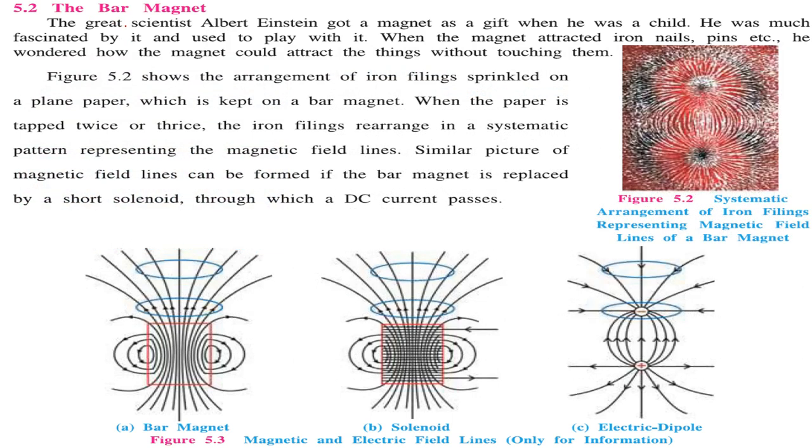The bar magnet. Great scientist Albert Einstein got a magnet as a gift when he was a child. He was quite fascinated by it and used to play with it. When the magnet attracted iron nails or pins, he wondered how the magnet could attract things without touching them. How is this possible?